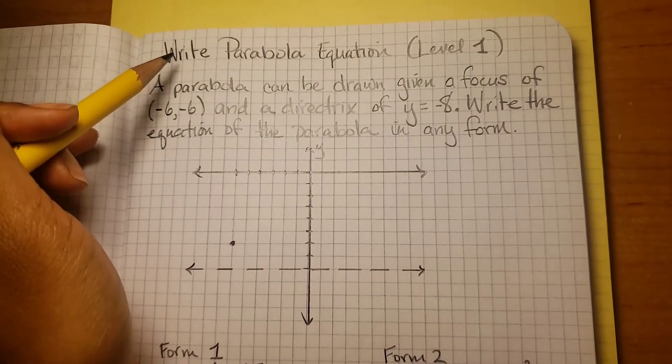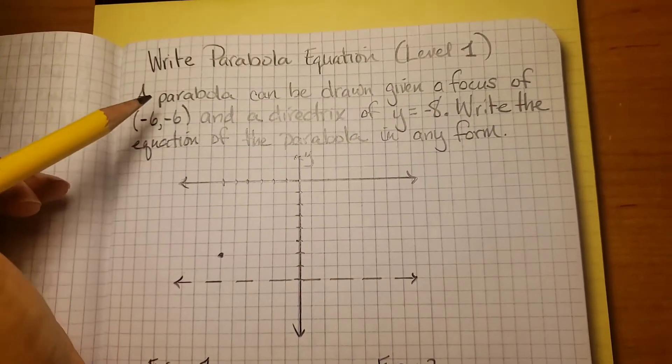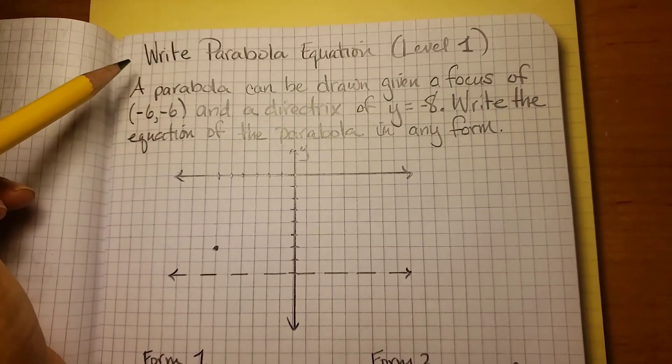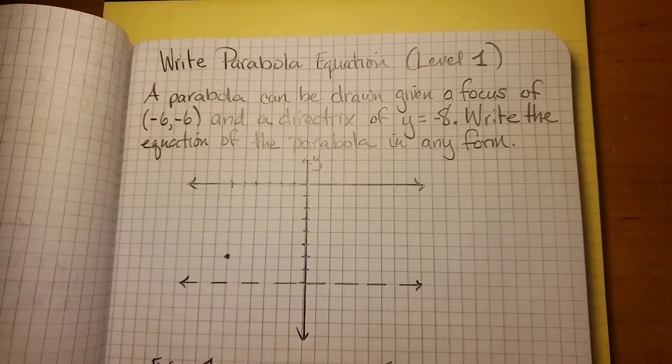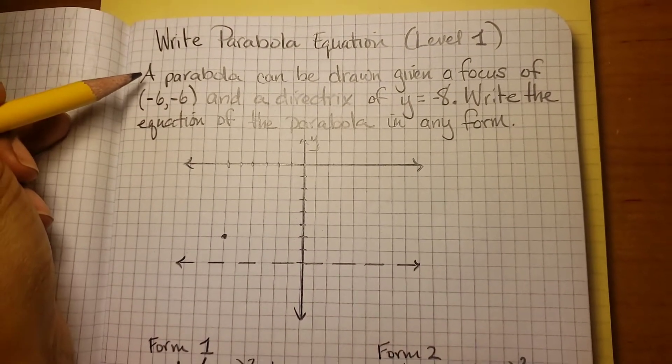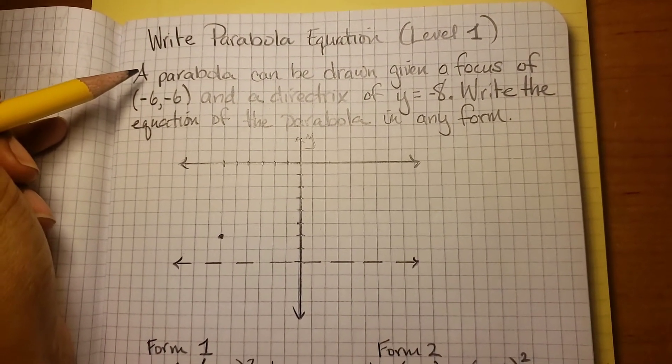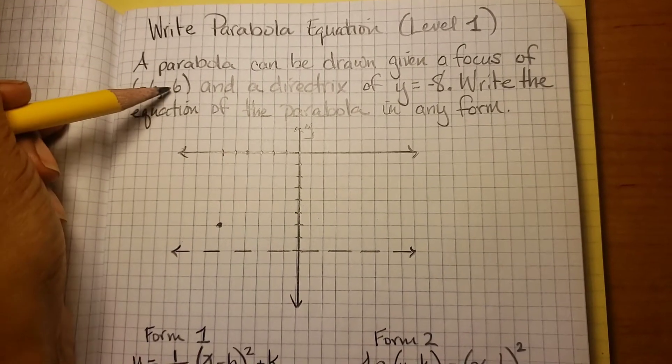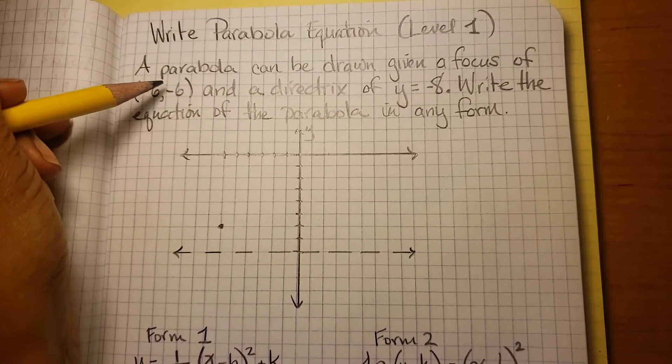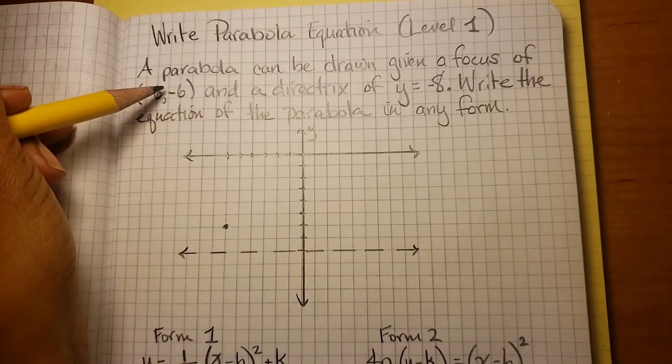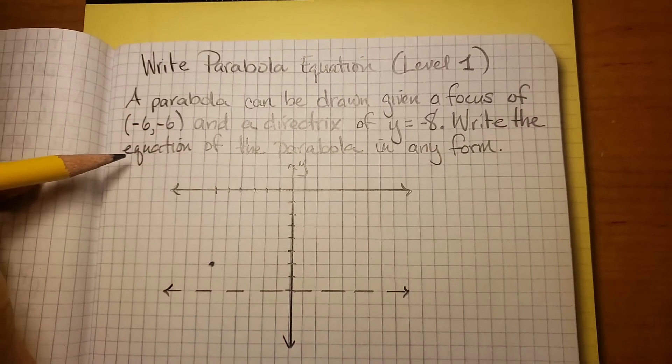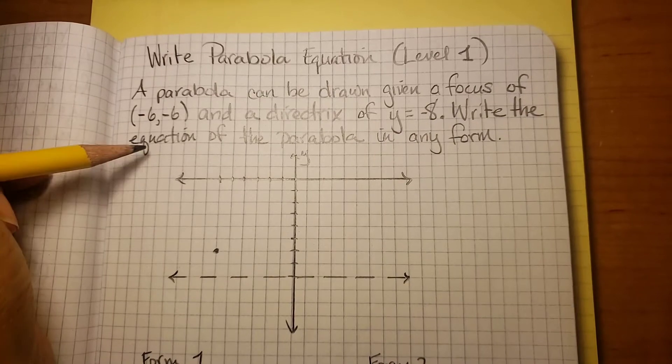Write parabola equation, level 1. This is from Delta Math. We have a parabola that can be drawn given a focus of (-6, -6) and a directrix of y = -8. Write the equation of the parabola in any form.